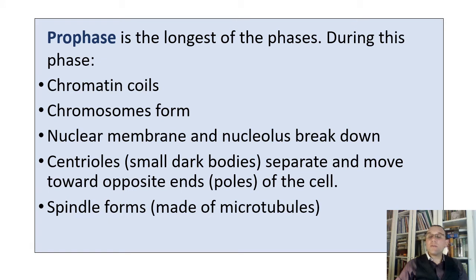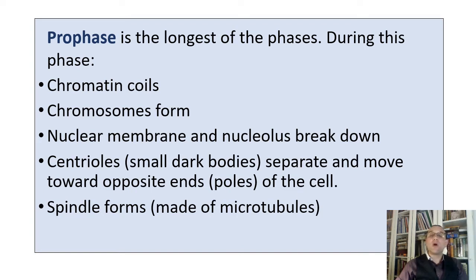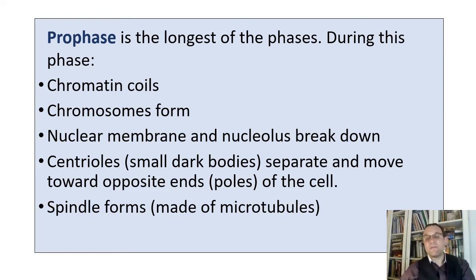The first phase of mitosis is called prophase. During prophase, the longest of the phases, chromosomes are formed when chromatin coils. Also, both the membrane that surrounds the nucleus and the nucleolus break down. The centrioles — small dark bodies — separate and move towards opposite ends, or poles, of the cell.